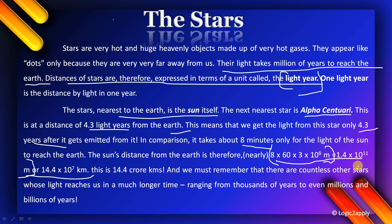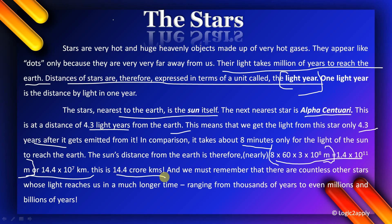The distance of the Sun from the Earth is 1.4 × 10¹¹ meters, or approximately 14.4 × 10⁷ kilometers. The most important question is: what is the distance between the Sun and the Earth? It is approximately 14.4 crore kilometers.